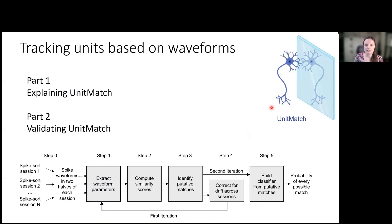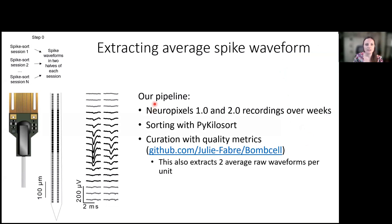So instead, we designed a software called UnitMatch. In the first part of this talk I'll explain UnitMatch, and in the second part I'll try to validate it and show you that UnitMatch seems to work. The input it uses is the average extracted waveform for every unit for every recording. That means we end up with two average spike waveforms for every unit for every recording, across every single recording channel. Here you can see an example unit recorded on a bunch of recording sites, and you can see that the average waveform is slightly different on every recording site — this is the input for UnitMatch.